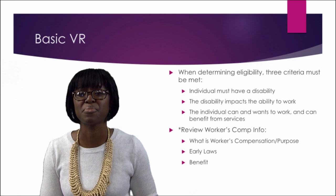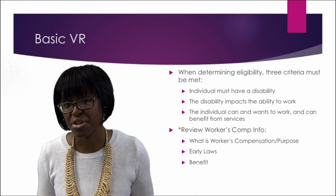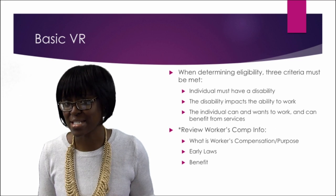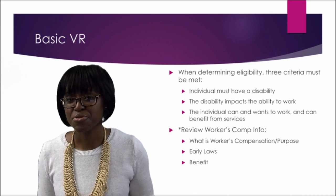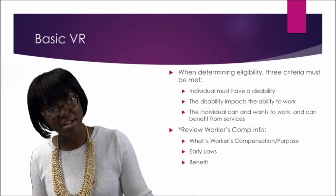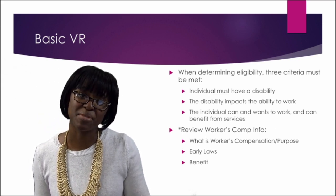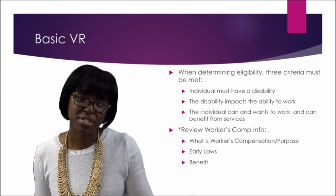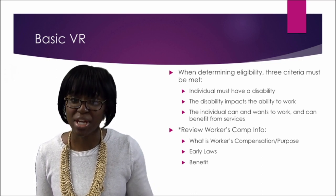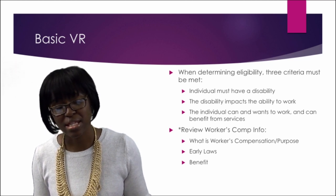Another important piece to remember since we're talking about criteria here is presumptive eligibility. That's a term you'll hear a lot, particularly with individuals who are receiving SSI or SSDI. They are usually presumed eligible because they're already receiving those types of benefits. So if they come in with that documentation, you'll need to have them get documentation of receiving those benefits, and then that presumption of eligibility can help them move faster through the application eligibility process and get started with services.